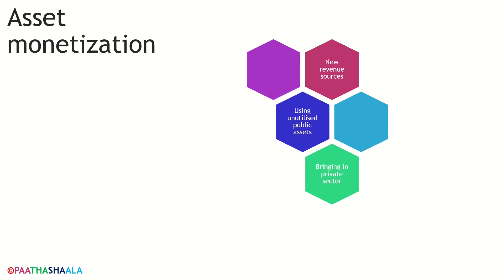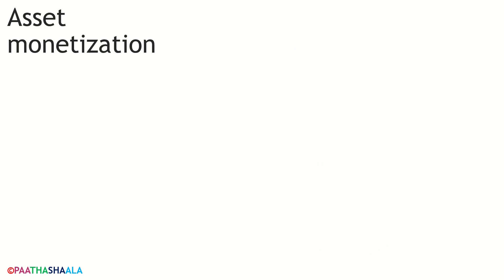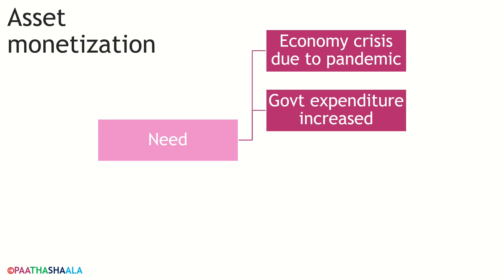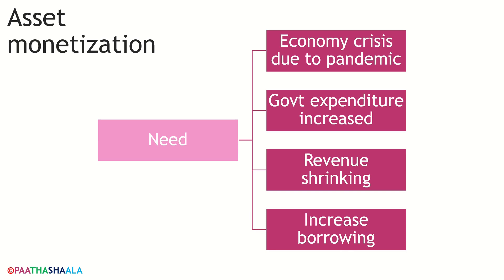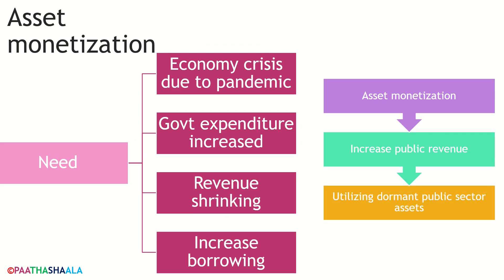Many public sector assets are underutilized and they can be appropriately monetized to create greater financial revenue. This helps to generate additional revenue that can be used for the development of the economy by using assets that are lying dormant. What brought the need for asset monetization? Due to the present pandemic, the economy witnessed a crisis which forced the government to increase spending for vulnerable sections of society, causing expenditure to rise and revenue to shrink. This forced the government to increase its borrowing, and that is when asset monetization was considered — to increase revenue by leasing public sector owned assets to the private sector.